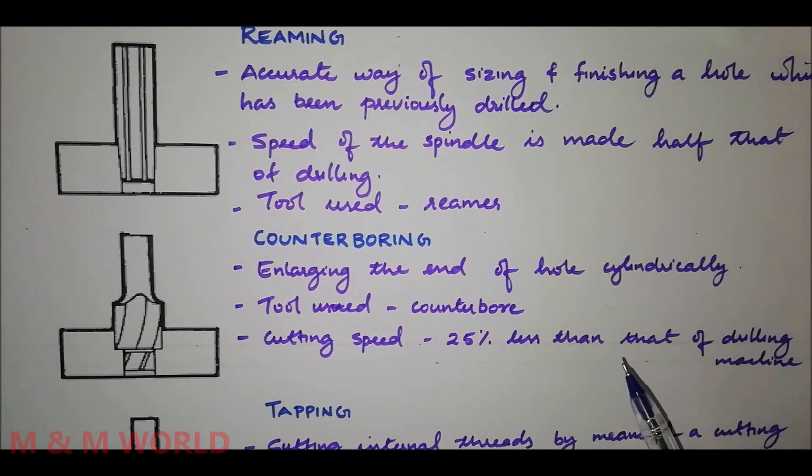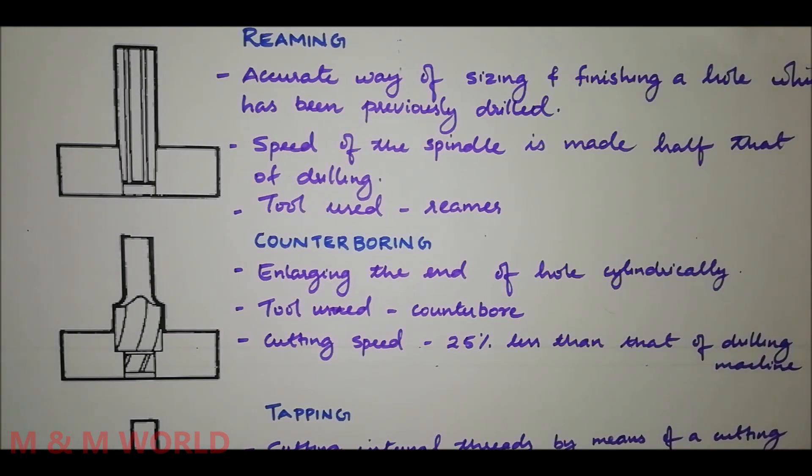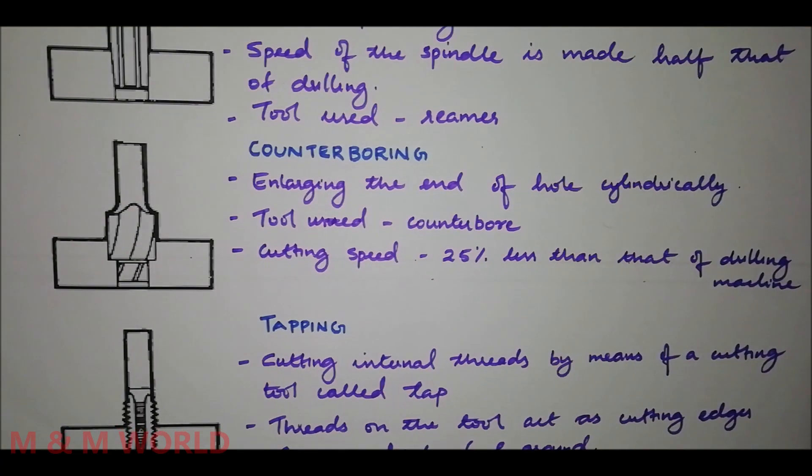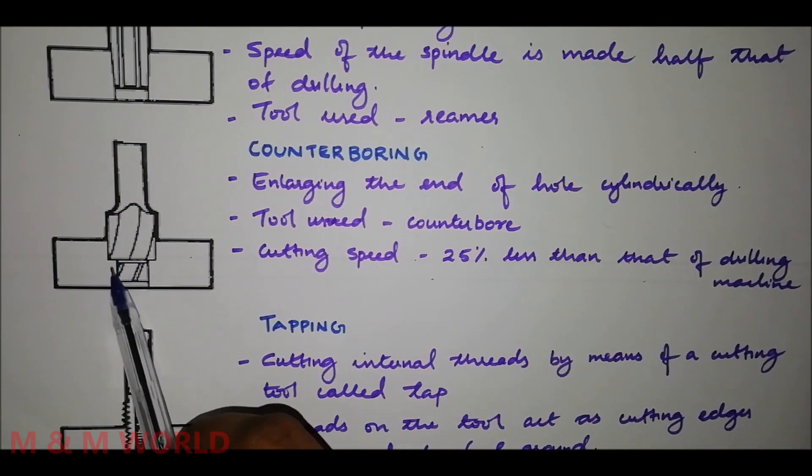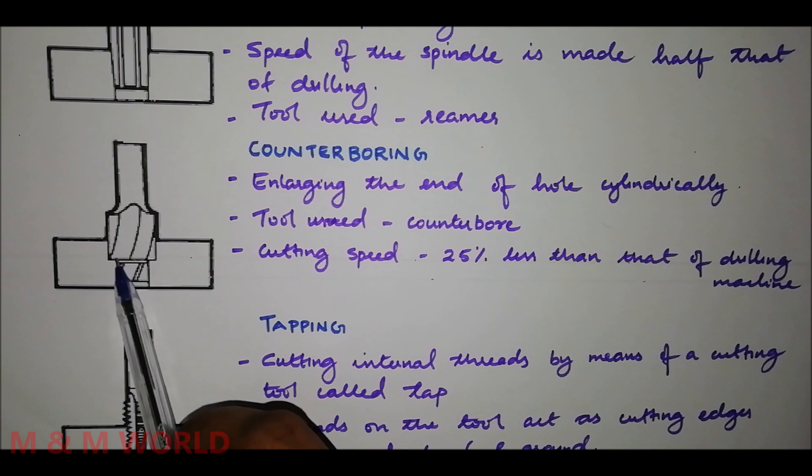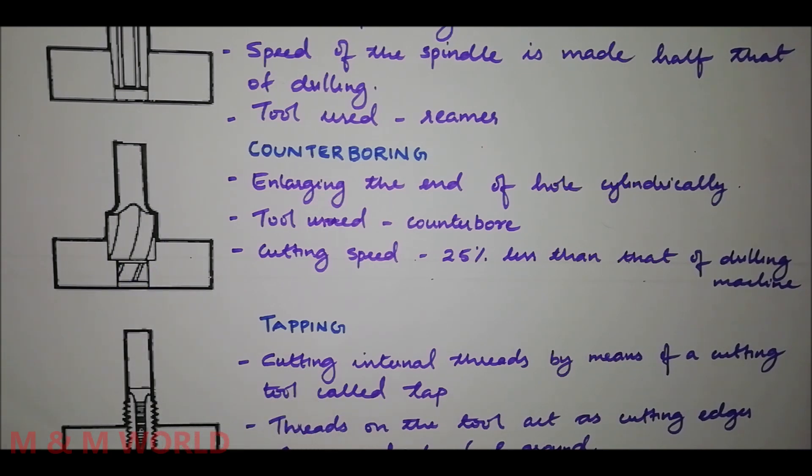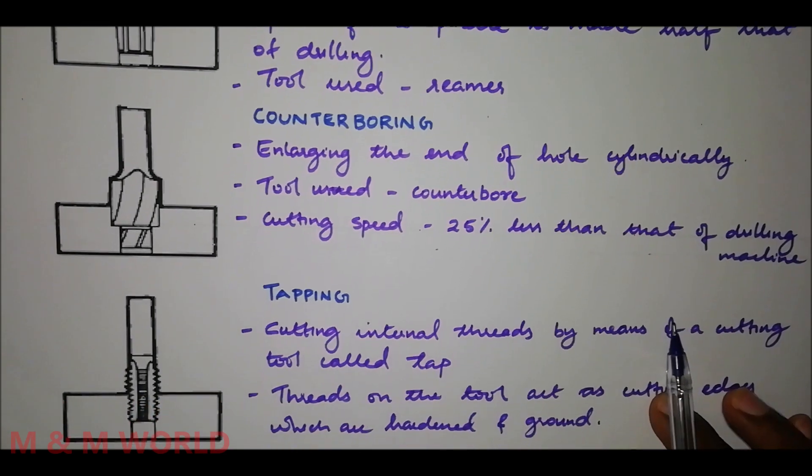The tool used for counter boring is the counter bore and the cutting speed is 25% less than that of drilling operations. Here you can see two holes, one with a smaller diameter and the other one with a larger diameter. Next one is tapping.